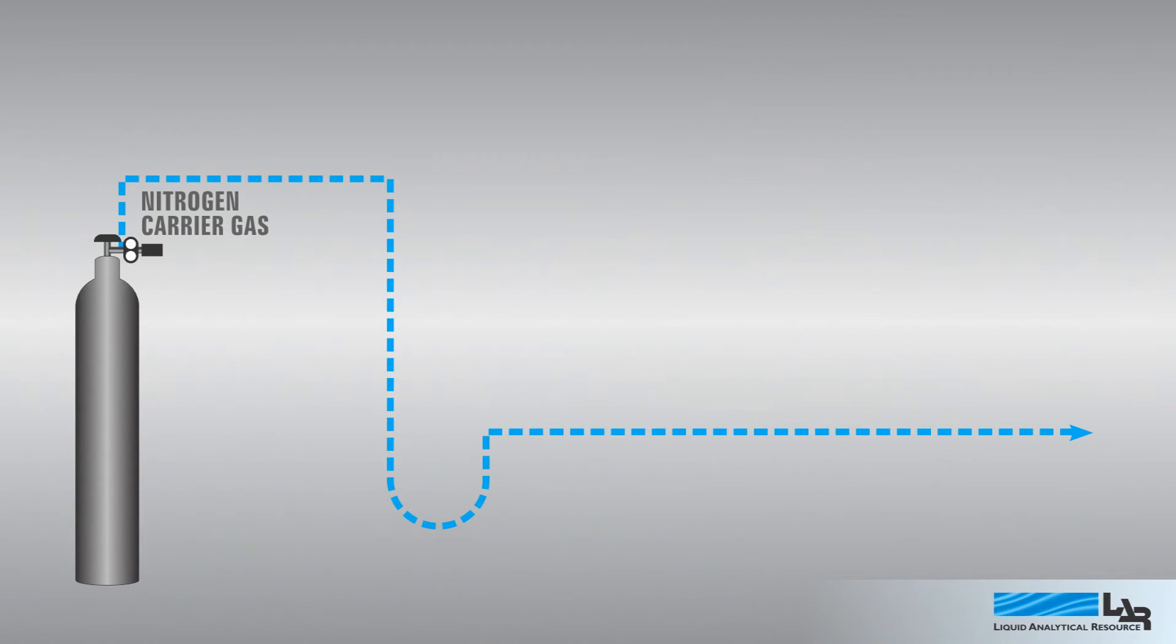During operation, a nitrogen carrier gas circulates continuously through the analyzer, and a small amount of air is added to provide a baseline of oxygen for the measurement. The nitrogen gas makes a circuit through the analyzer, where it passes through a high-temperature furnace.